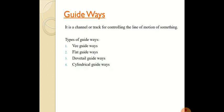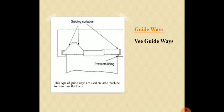Next one is the guideways. What are guideways? They are nothing but a channel or track for controlling the line of motion of something. There are different types of guideways: the V guideways, the flat guideways, the dovetail guideways, and the cylindrical guideways. Let's study one by one. First is the V guideways.